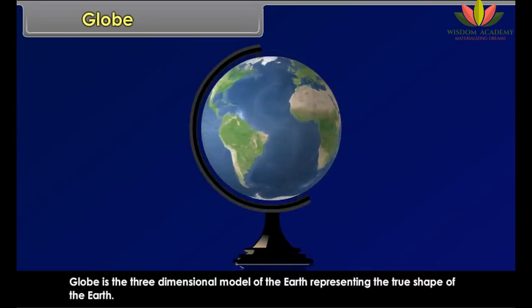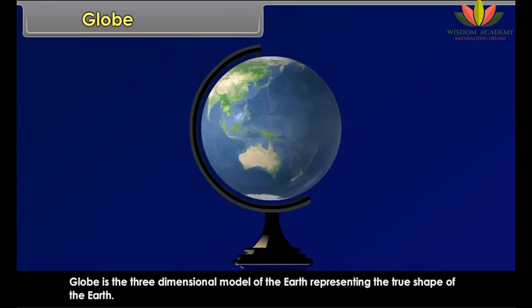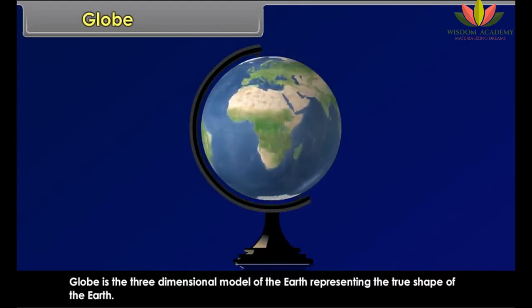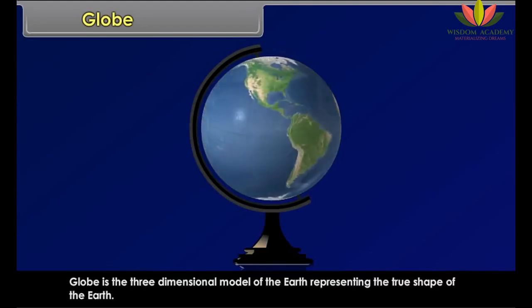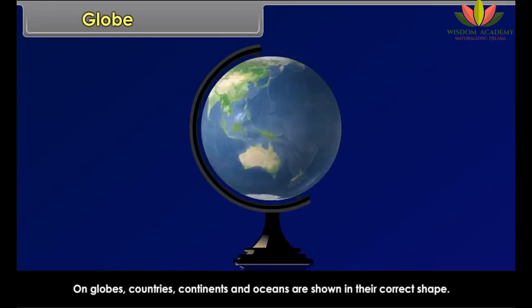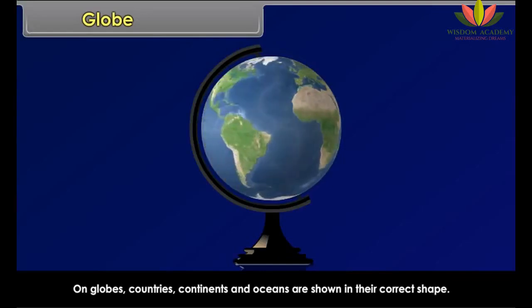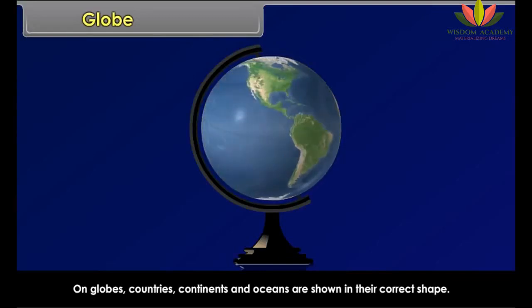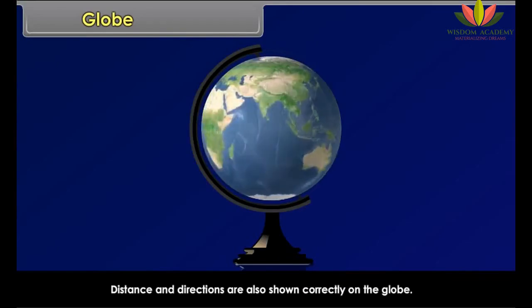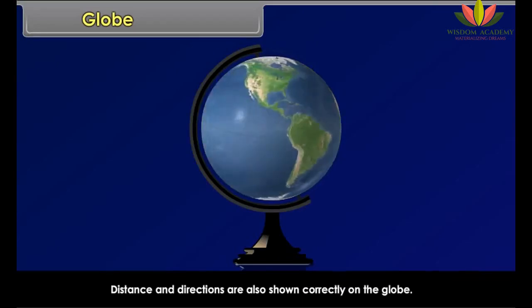A globe is the three-dimensional model of the earth representing the true shape of the earth. On globes, countries, continents and oceans are shown in their correct shape. Distance and directions are also shown correctly on the globe.